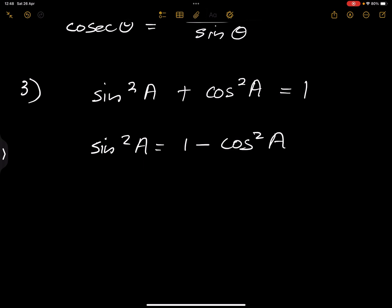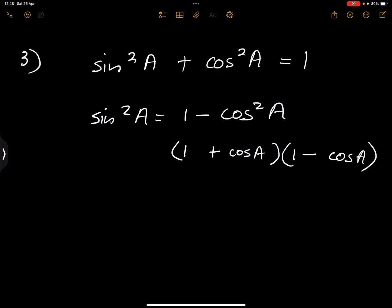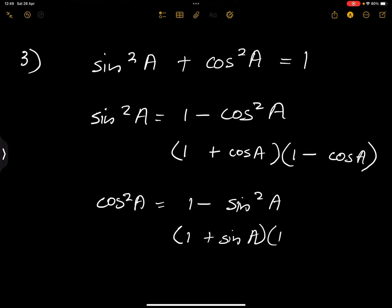An important relationship to note: this can also be the difference of two squares. When you factorize the difference of squares you get (1 + cos A)(1 − cos A). Similarly, when you've got cos squared of any angle, you may need to write it as 1 minus sine squared of that angle, which is also the difference of squares and can be factorized in the same manner.